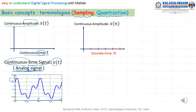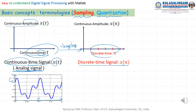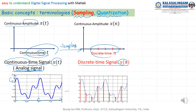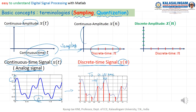First, we convert continuous time to discrete time — this process we call sampling. We call this discrete time signal X of n. From this, you change the continuous time to discrete time. In this case, the sampling period equals 0.25 seconds. This sampling period equals Ts.